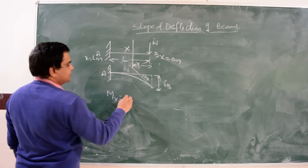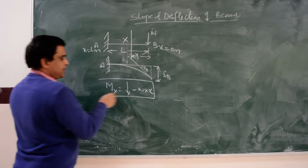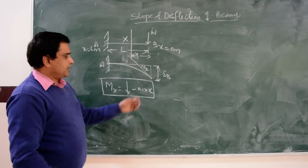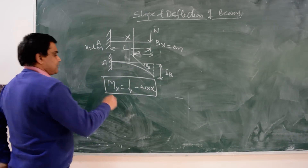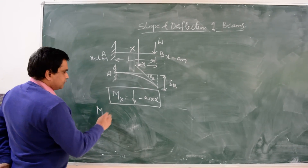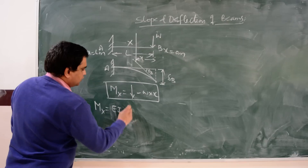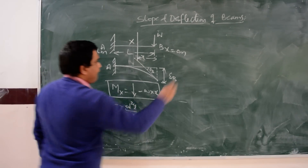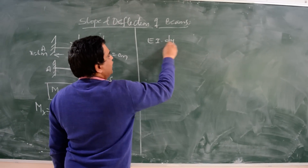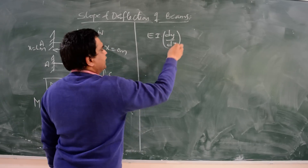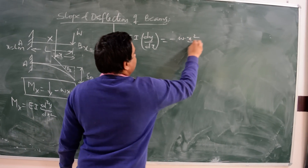At the section x, the bending moment is determined. The load acts downward, so the bending moment is negative: Mx equals minus W times x (force into distance). Therefore, bending moment at x equals EI times d²y/dx². The first integration of this bending equation gives the value of slope: EI times dy/dx equals minus W times x²/2 plus C1.